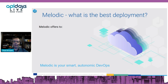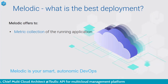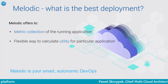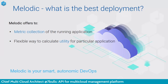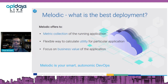What is this best deployment? The first thing built into Melodic is metric collection. Melodic collects metrics from the running application and, based on those metrics, is able to calculate the utility function for the particular application in a flexible way. We can compare the goodness of a given deployment to another available deployment. We can focus on the business value — metrics could be both technical, like CPU and memory, and business-like, such as average response time to the customer or average processing time for a given task. Thanks to that, deployment can be optimized on business value.